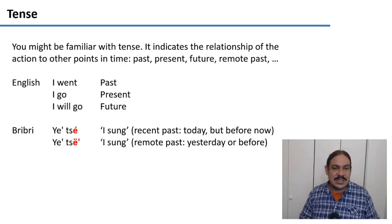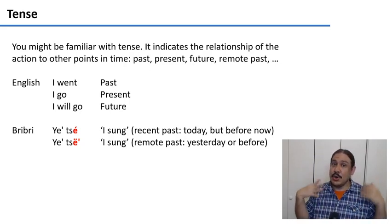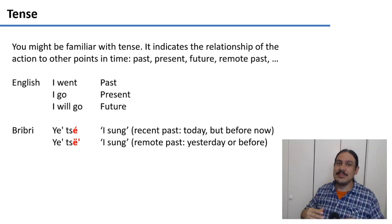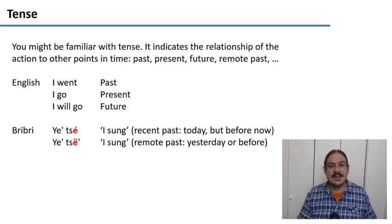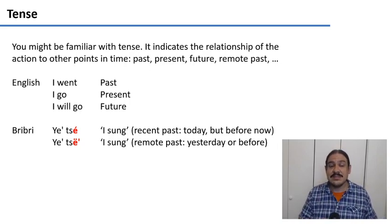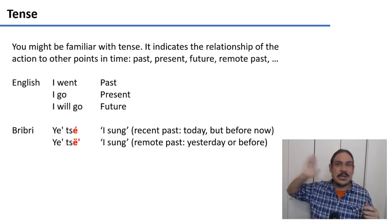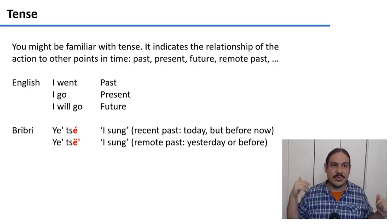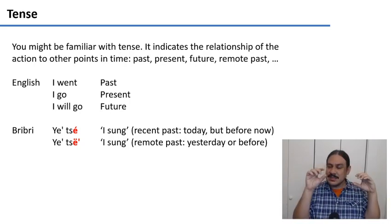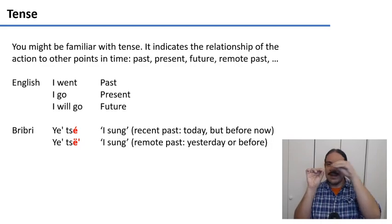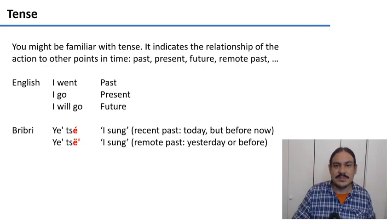For example, 'jetsi' — I sung — means that I sung earlier today. Whereas 'jetsi' in the remote past means that I sung yesterday or a year ago, and so forth. So tense is the relationship between you and the time of the action.